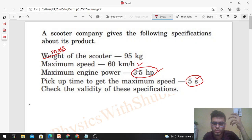So check if 60 kilometer per hour is correct or not. And second method, you can check out the power of the engine required to attain this maximum speed in 5 seconds. So you can check in both ways. Let's talk about the first method.